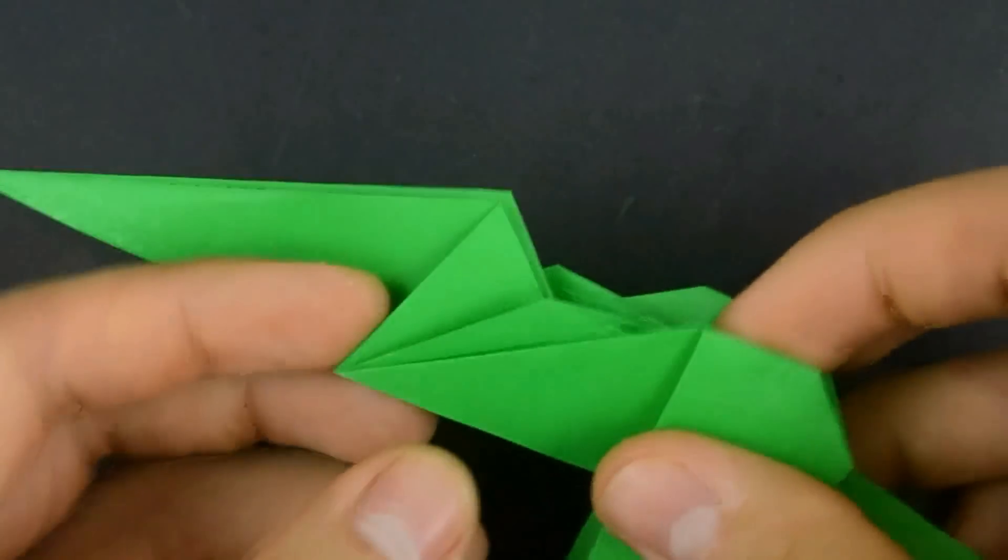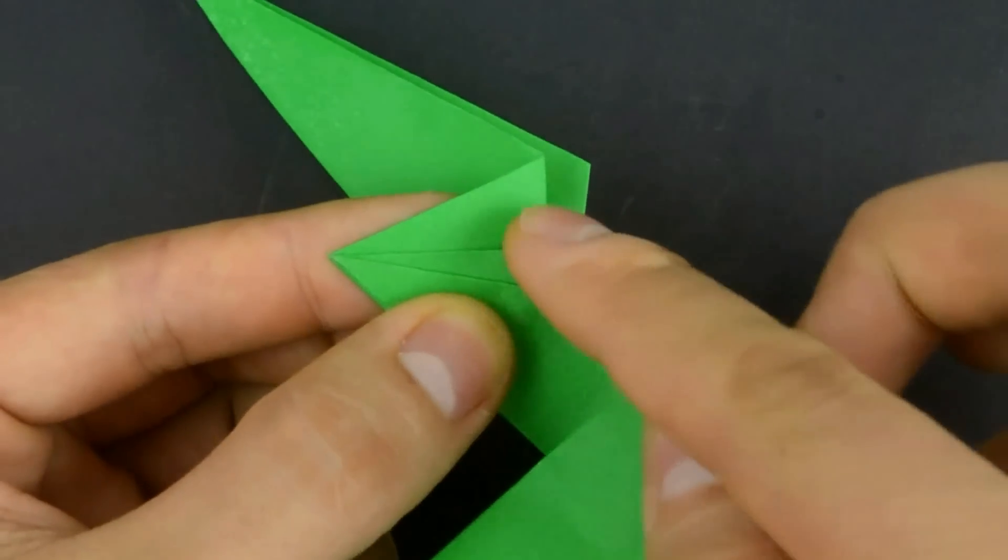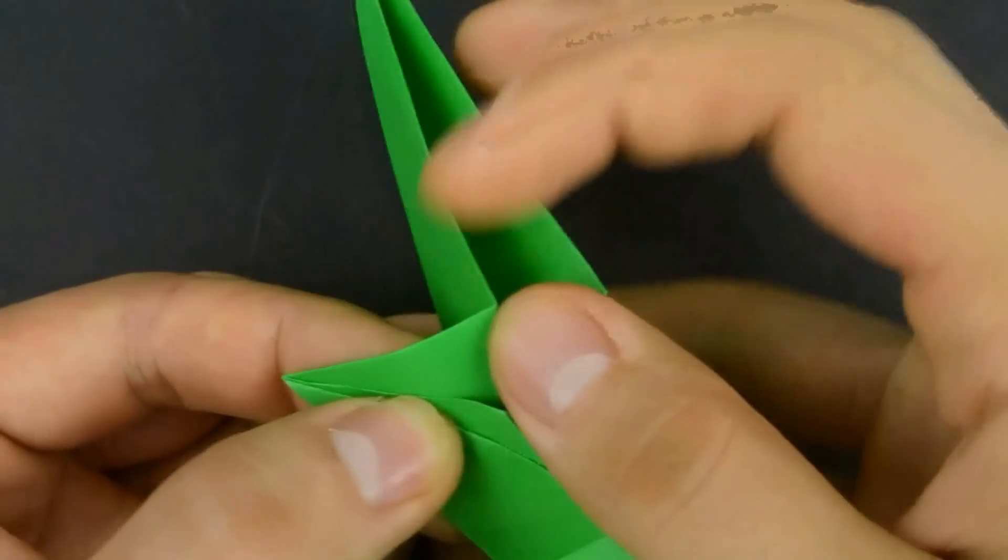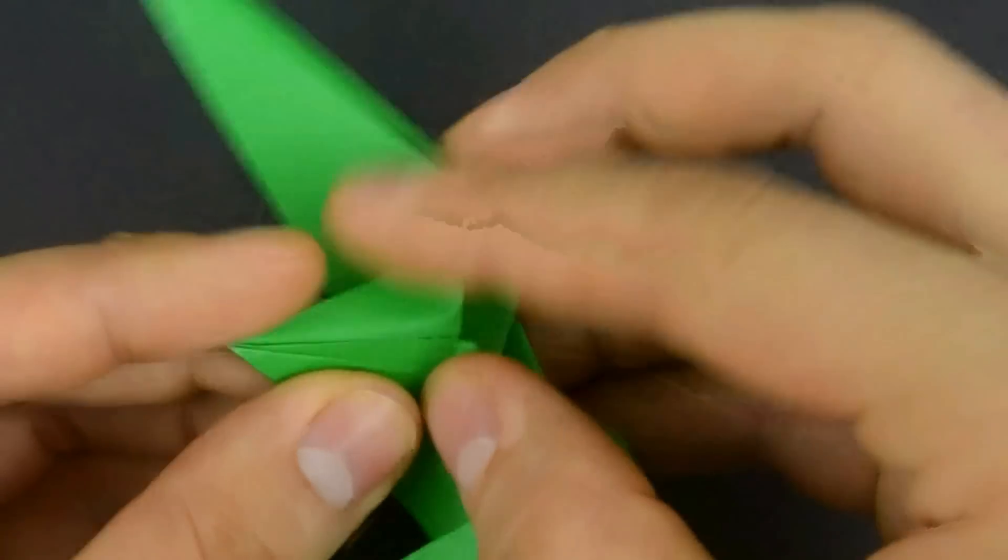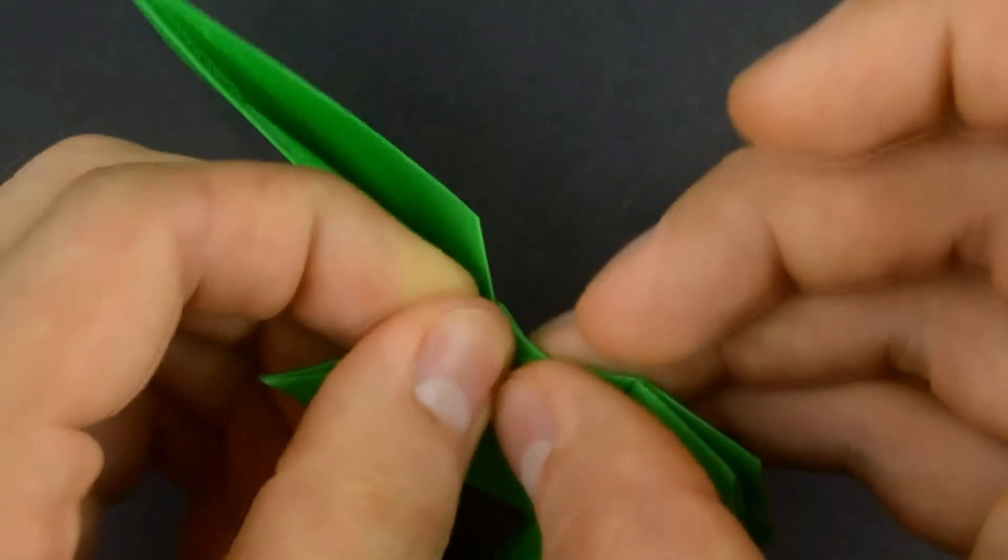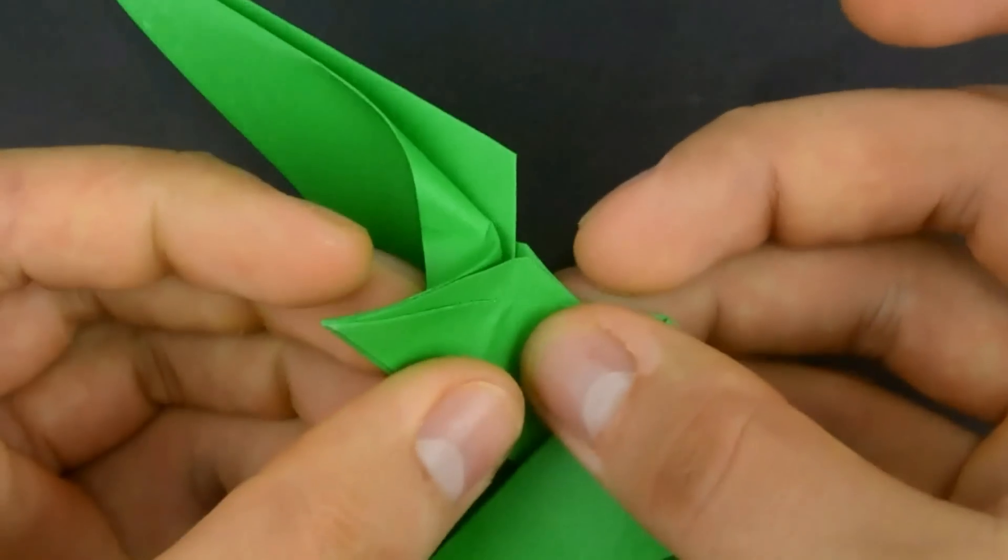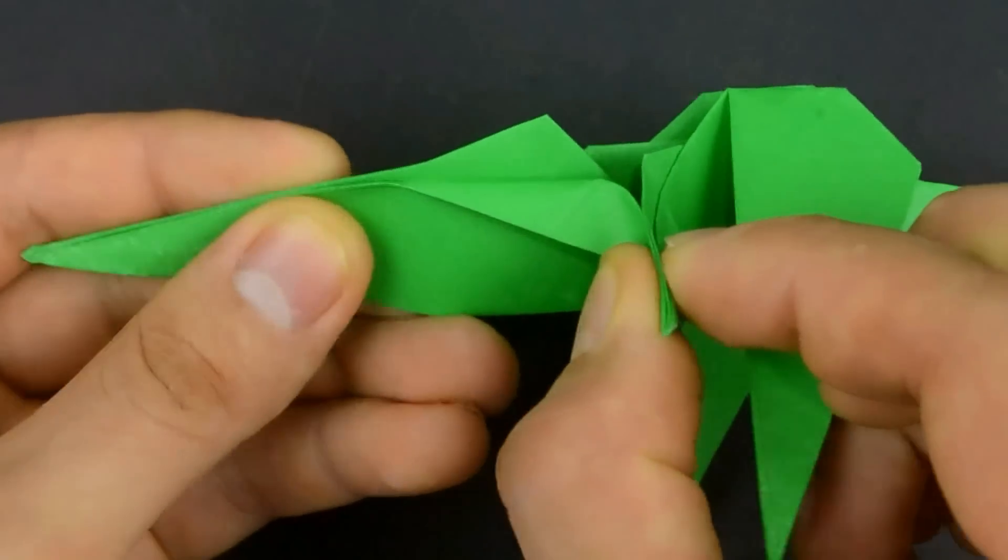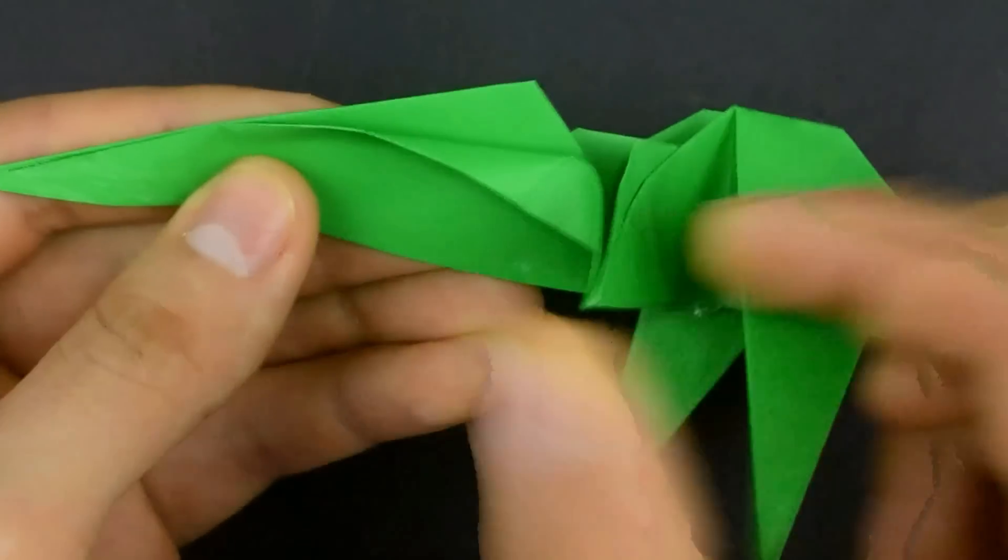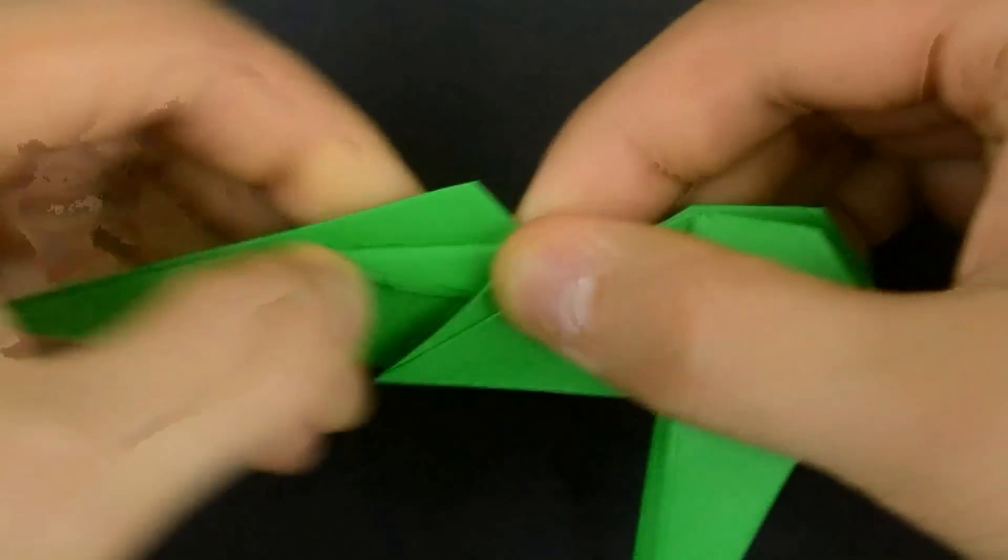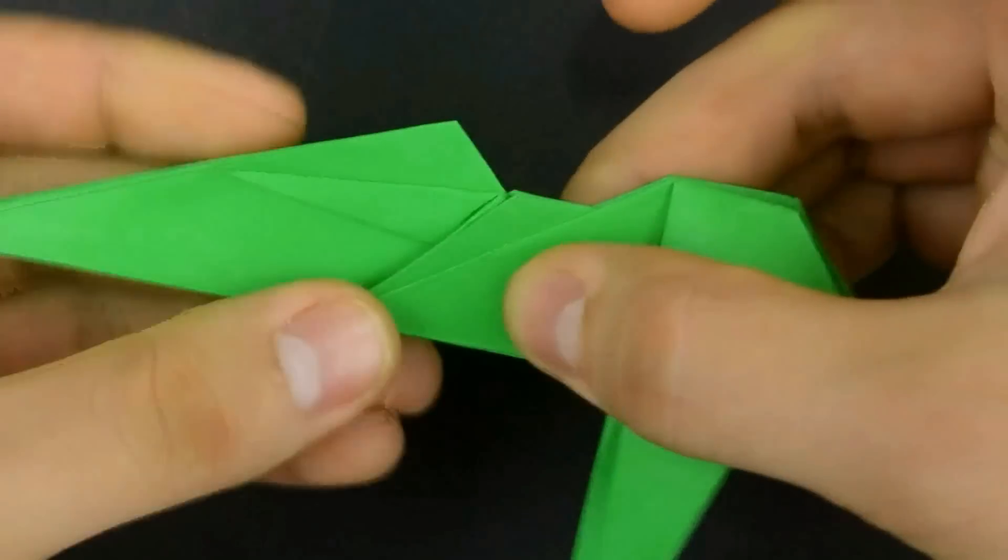Now on the other flap, let's make a diagonal here, aligned with the above layer. That way. Then bring the paper down, almost like a horizontal crease, with only a little tilt. More or less like this.